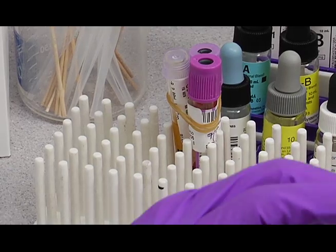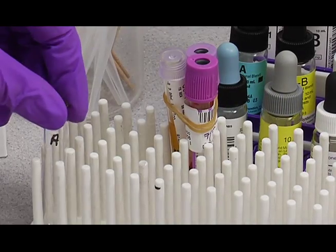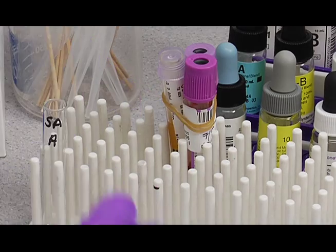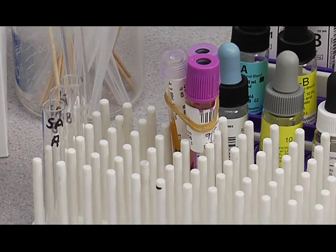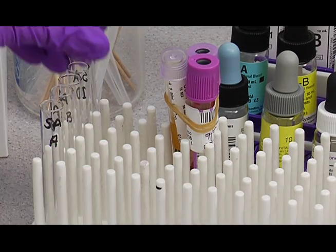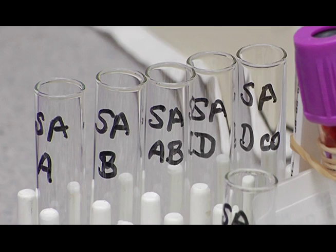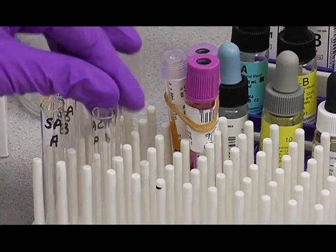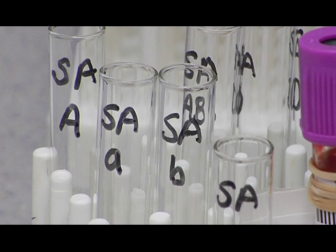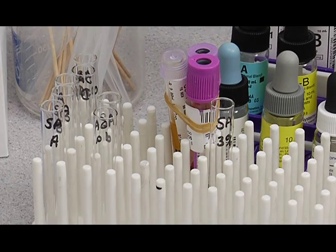Then after you have labeled your tubes, place the tubes in the rack like this. You're going to put the forward typing tubes in this row like this. The reverse in this row here. And the 3% suspension tube right here.